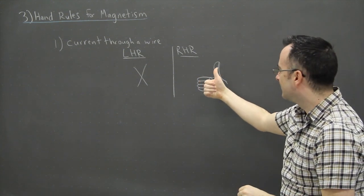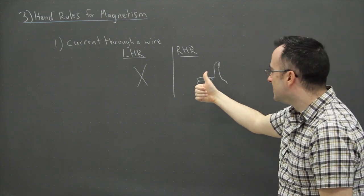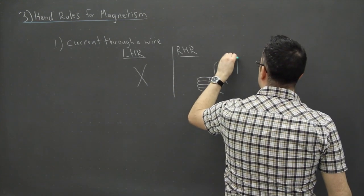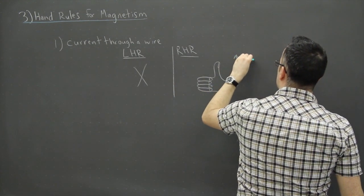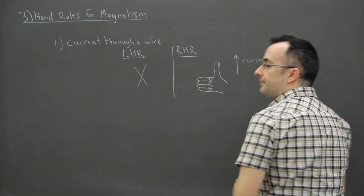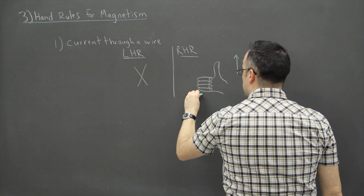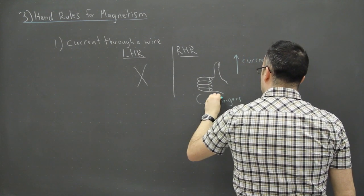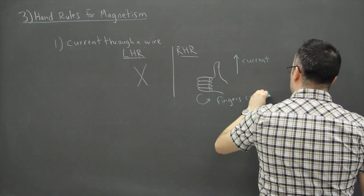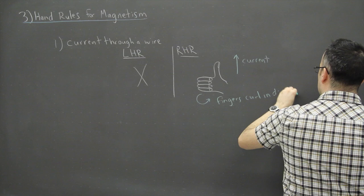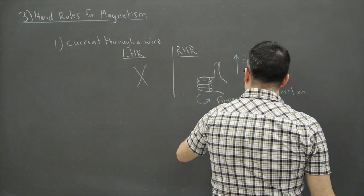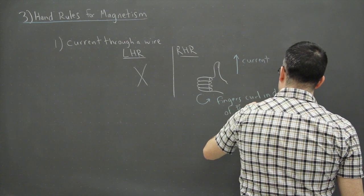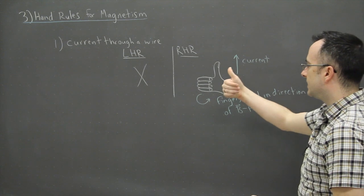You can probably draw this much better than I can. Your thumb represents the direction of the current, and your fingers curl in the direction of the magnetic field — the B field.